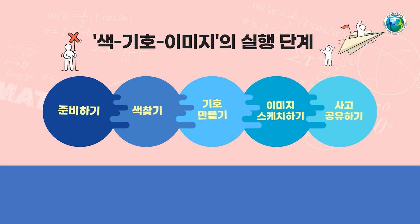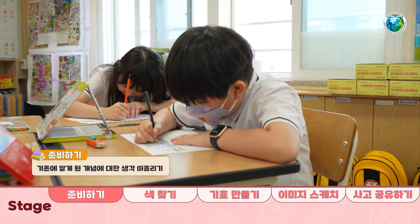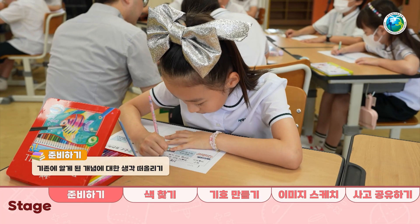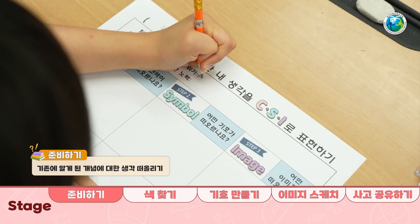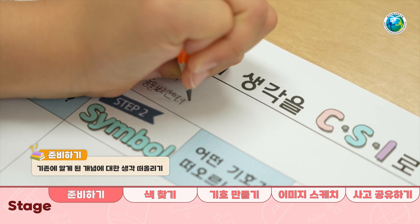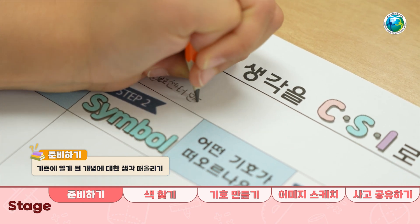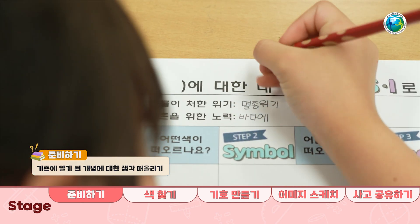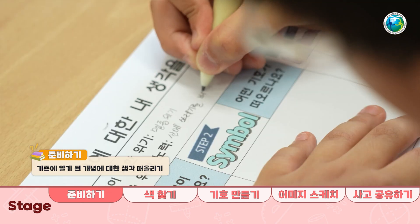색기호 이미지 기법의 실행 단계는 다음과 같습니다. 아이디어를 떠올리는 준비하기부터 시작해서 색찾기, 기호 만들기, 이미지 스케치를 한 후에 생각한 것을 공유하는 순서로 진행됩니다. 준비하기 단계에서는 공부한 것과 관련해서 핵심 아이디어를 떠올려보고 중요하다고 생각하는 것을 적습니다. 함께 공부했던 것들을 다시 살펴보고 공유하는 과정 등을 통해 CSI 사고 기법을 위한 준비를 마칩니다.